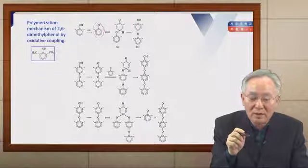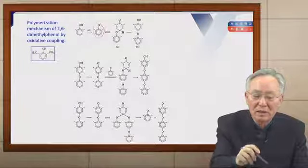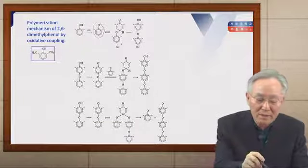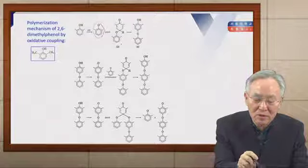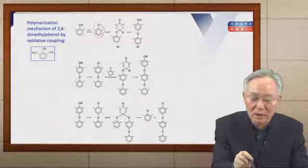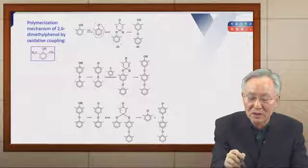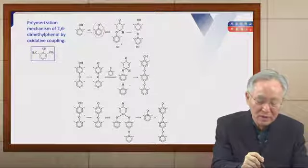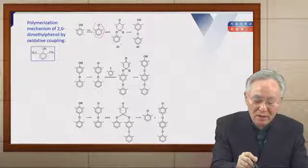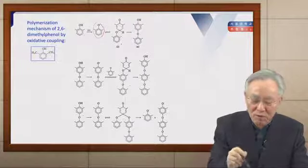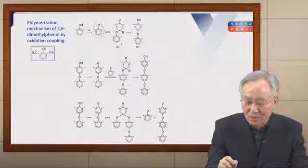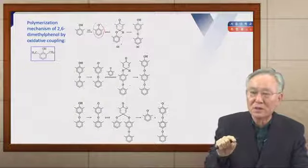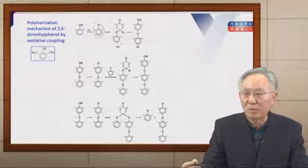The monomer 2,6-dimethylphenol is oxidized by oxygen to produce a monomer radical. This radical attacks another monomer to produce an intermediate, giving a dimer. The dimer is oxidized to a dimer radical, which attacks another monomer or dimer radical to produce intermediates and grow to tetramer and higher oligomers, ultimately yielding high molecular weight polyphenylene oxide.